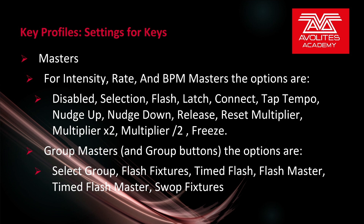Selection would select that master. Nudge up and nudge down nudge the master value up or down. Reset multiplier resets the multiplier to 1x. Multiplier 2x sets the multiplier to 2x. Multiplier divided by 2 divides the multiplier by 2. Freeze is generally used for a rate or BPM master — it drops the rate to 0, then returns to its previous value when released. If it's a group master or group buttons, the options are: select group, flash fixtures, timed flash, flash master, timed flash master, and swap fixtures — each working as their names suggest.